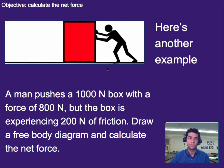So let's give that another shot. Here's another example. A man pushes a 1000 newton box with a force of 800 newtons, but the box is experiencing 200 newtons of friction. Draw a free body diagram and calculate the net force. Let's go ahead and pause and give it a shot. All right, welcome back. Hopefully you paused and gave it a shot.